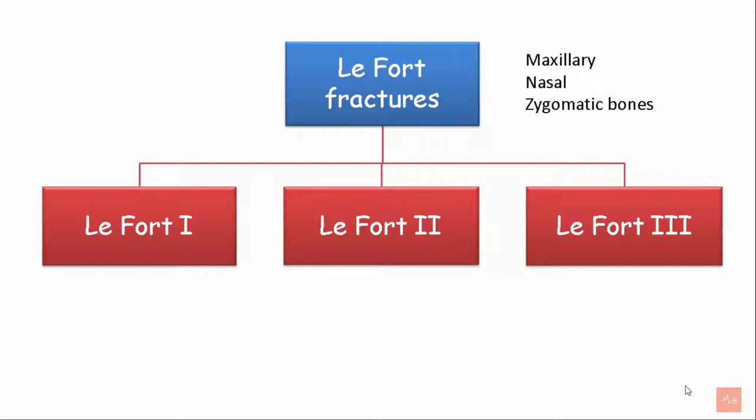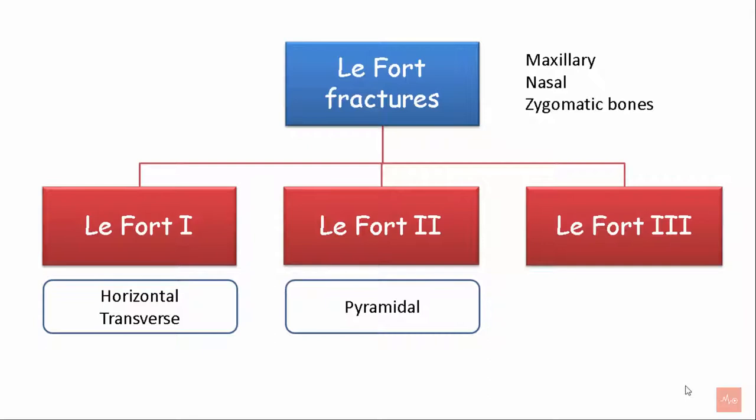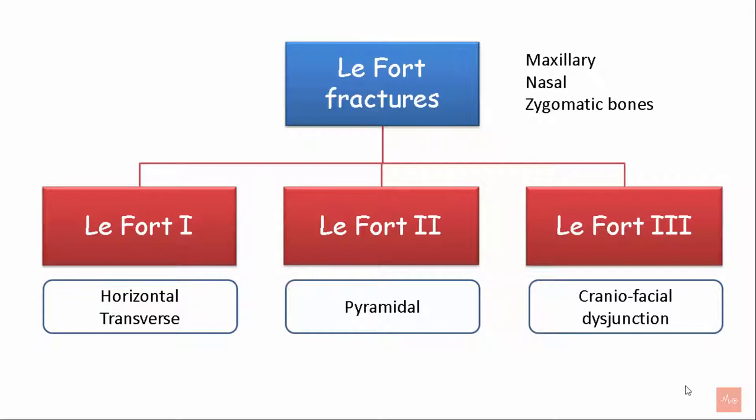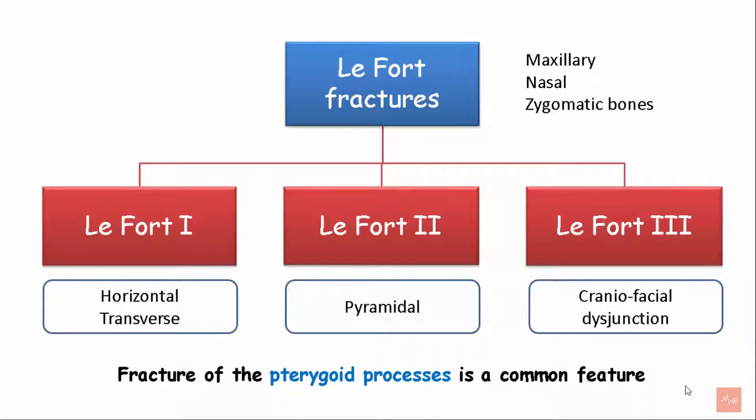LeFort 1 fractures are also called horizontal or transverse fractures. LeFort 2 fractures are pyramidal fractures and involve the orbital rims. LeFort 3 are complex fractures which lead to craniofacial disjunction. The common feature of all these fractures is the fracture of the pterygoid process.